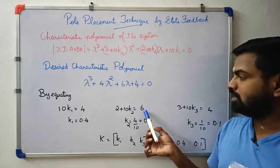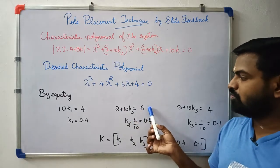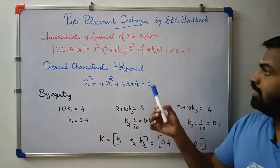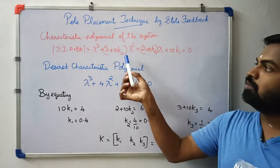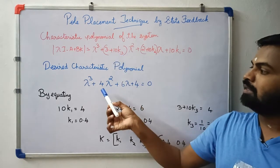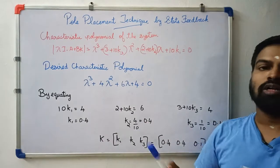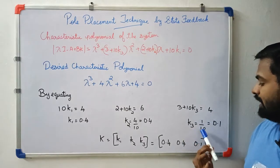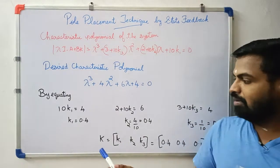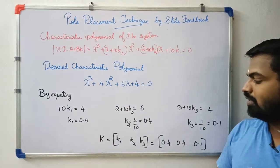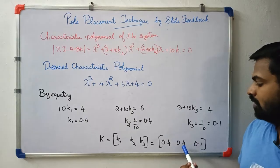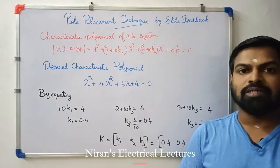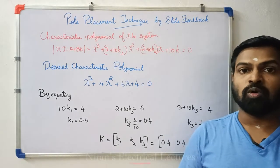Comparing coefficients: 2 plus 10k2 equals 6, so k2 equals 4/10 equals 0.4. The lambda² coefficient gives 3 plus 10k3 equals 6, so k3 equals 0.3. And k1 equals 0.4. Therefore the gain matrix K equals [k1, k2, k3] equals [0.4, 0.4, 0.3]. This is the second method for pole placement technique.